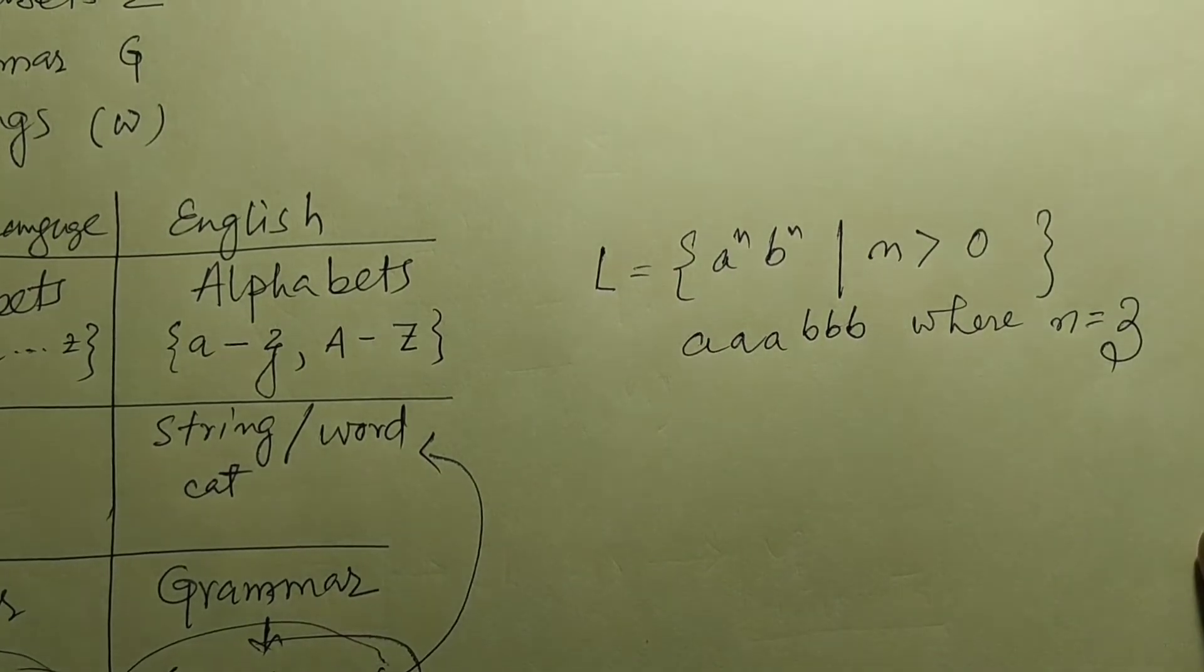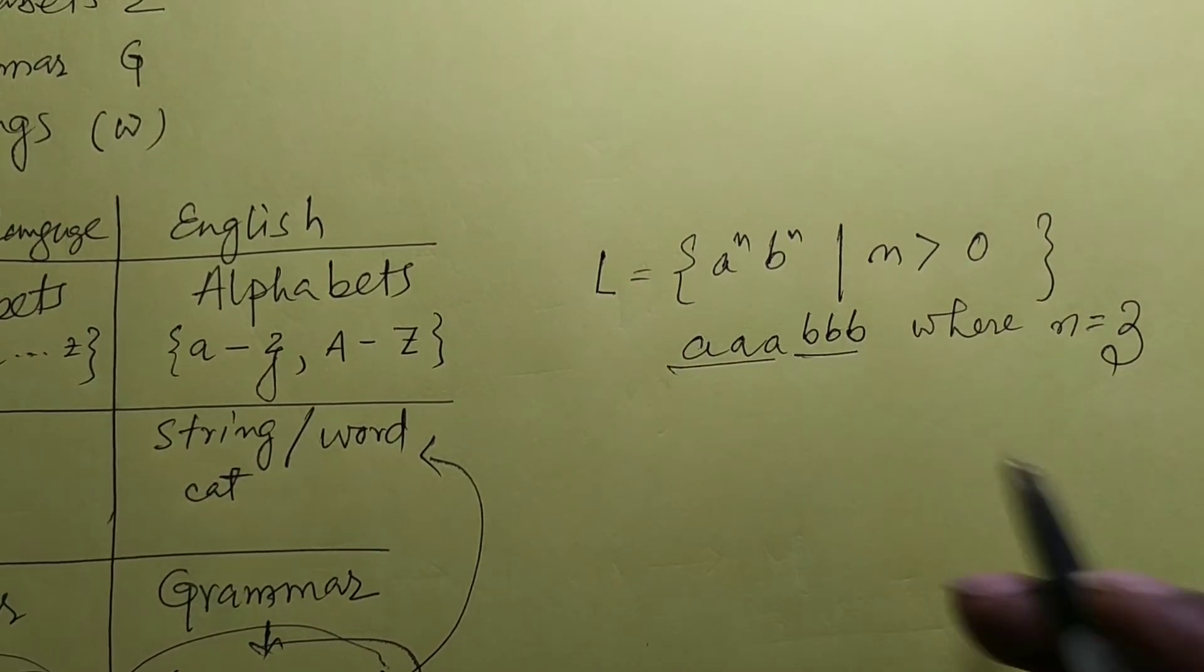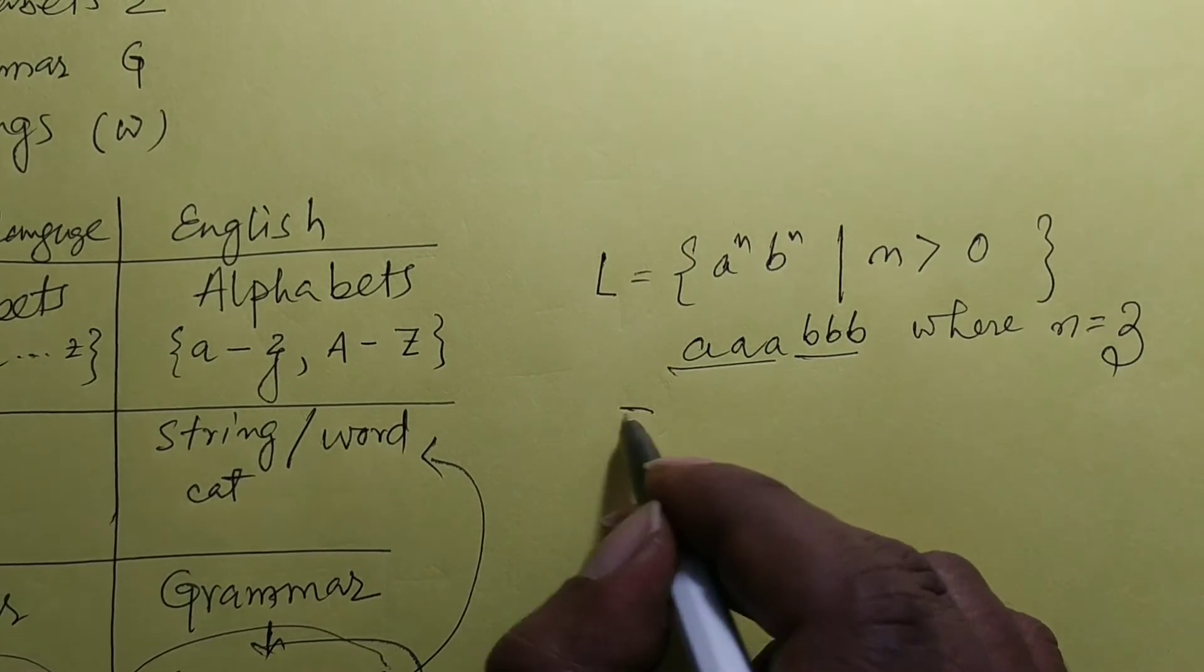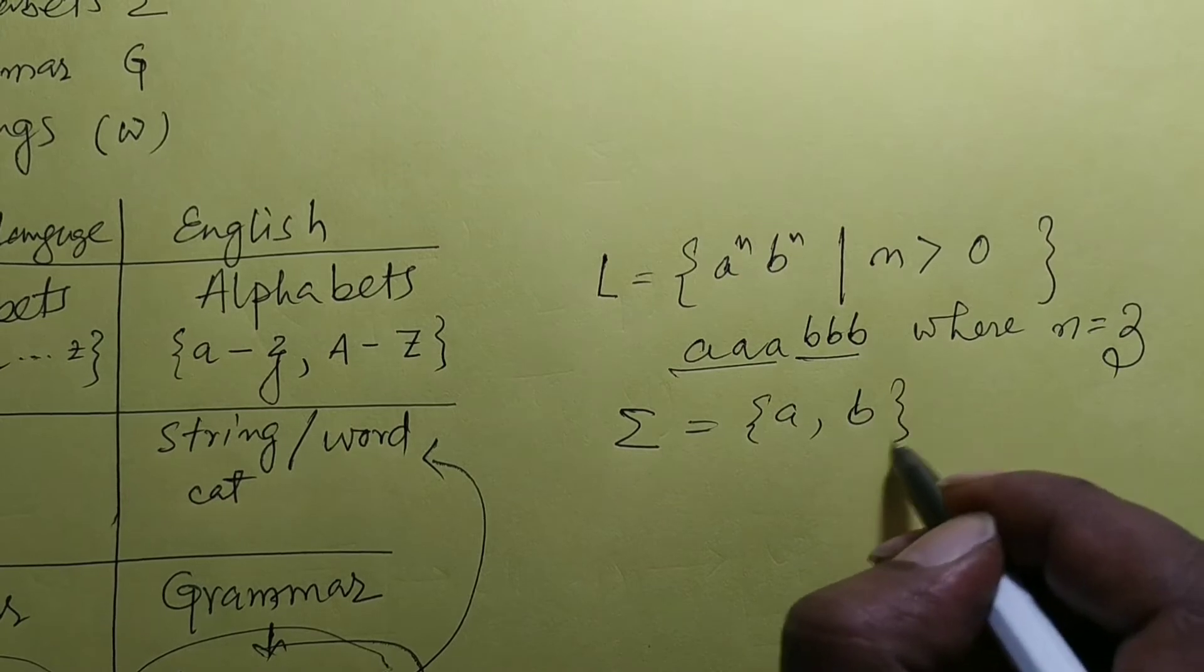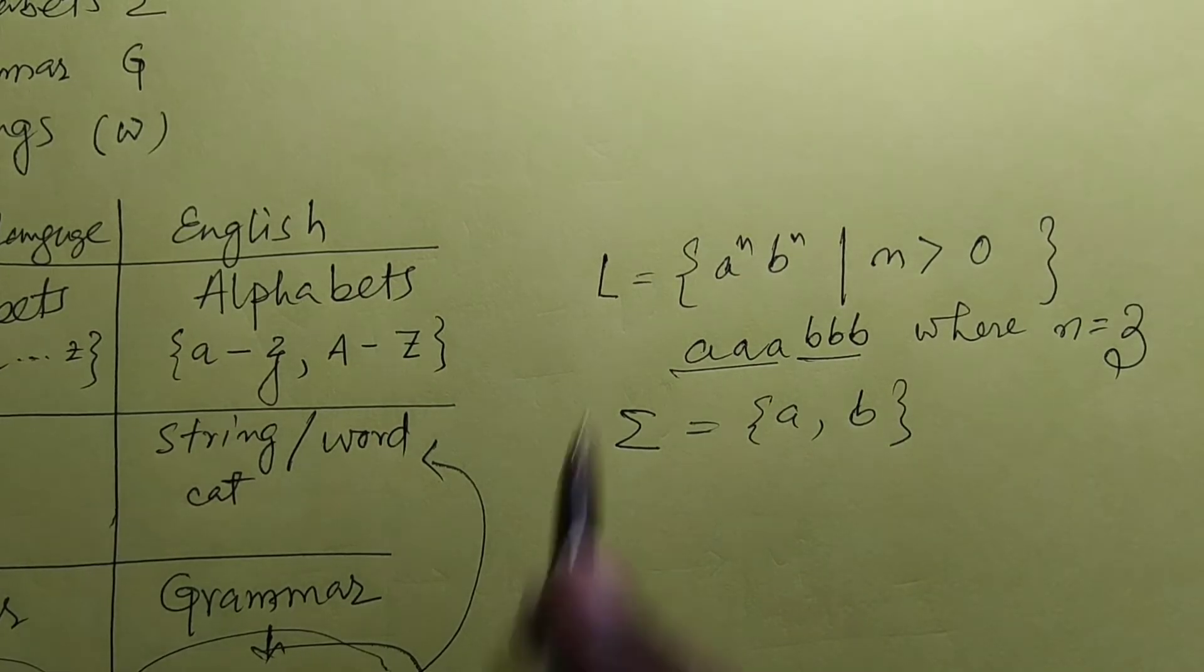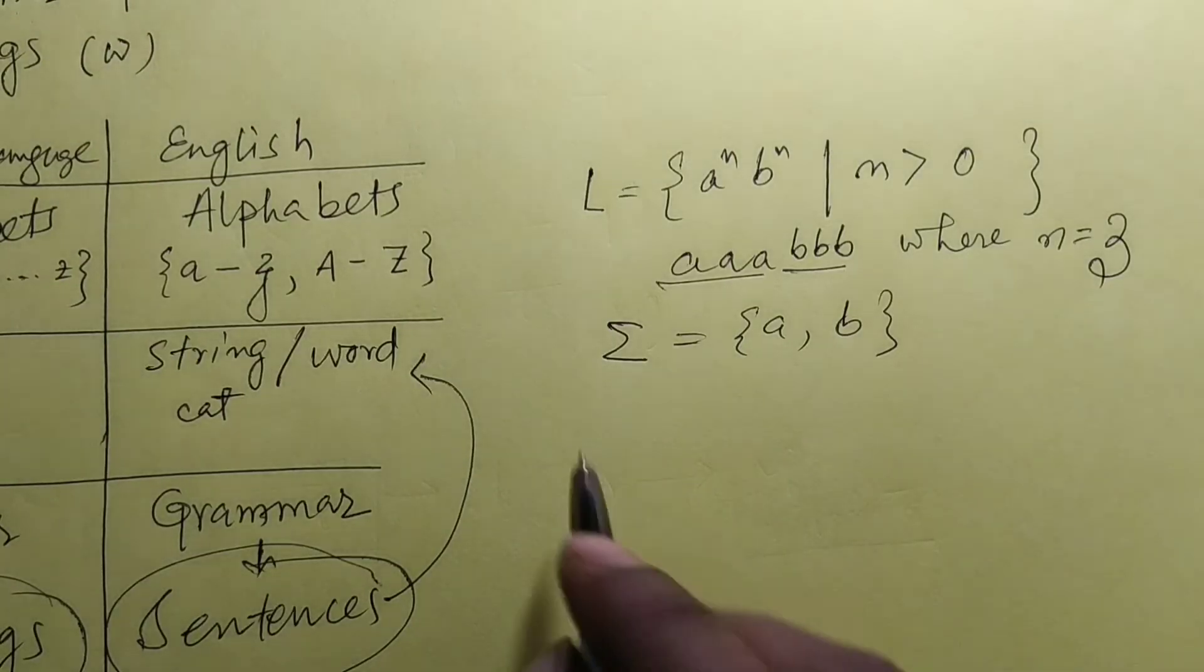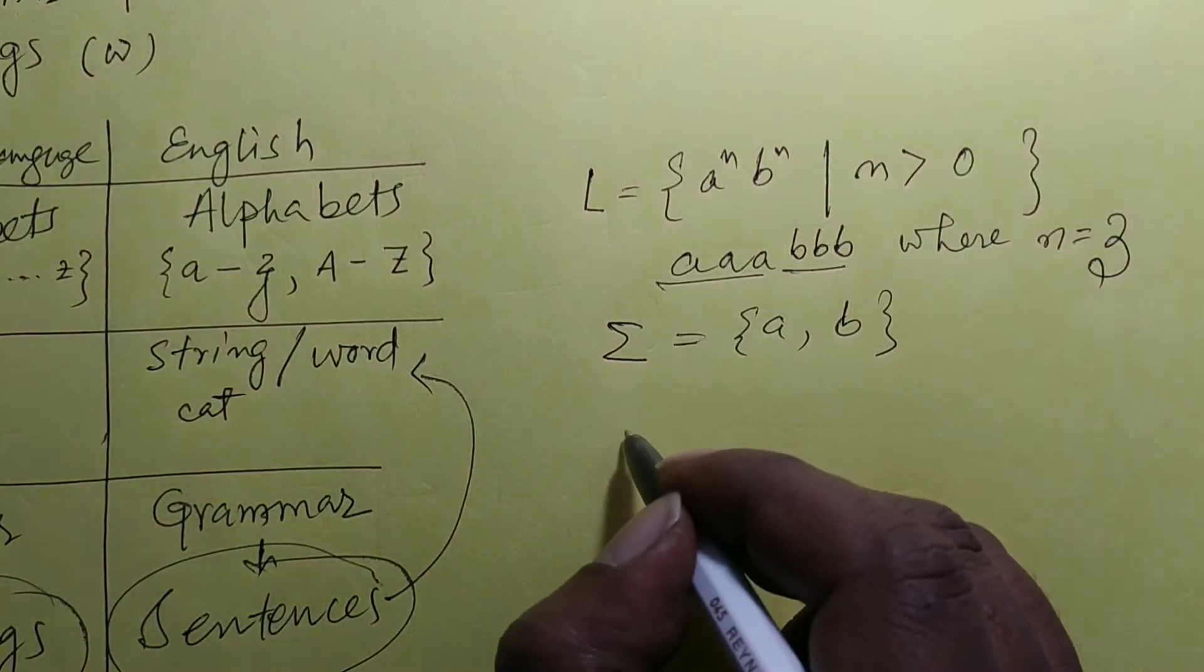So here three number of a's followed by three number of b's. So what is alphabet? Alphabet is a and b. This is the language, and what is the grammar here? So here grammar rules are...